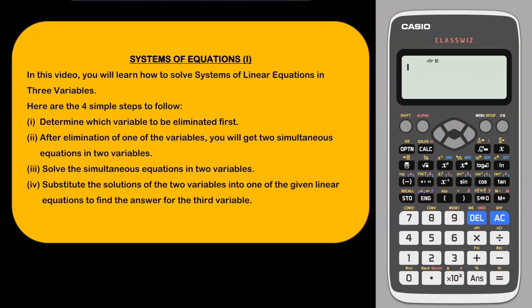In this video, you will learn how to solve systems of linear equations in 3 variables. Here are the 4 simple steps to follow. Number 1: determine which variable to be eliminated first. Number 2: after elimination of one variable, you will get 2 simultaneous equations in 2 variables. Number 3: solve the simultaneous equations in 2 variables. Number 4: substitute the solutions of the 2 variables into one of the given linear equations to find the answer for the third variable.